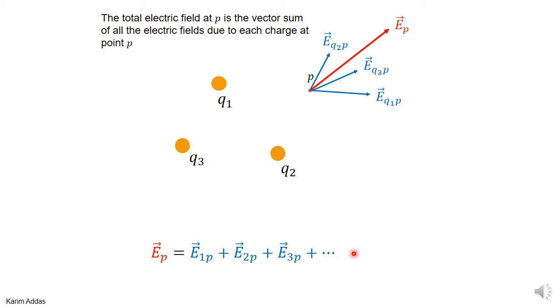So once we get this total electric field vector at point P, which is the sum of the electric field vectors of each charge,